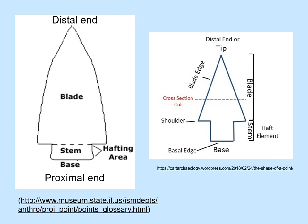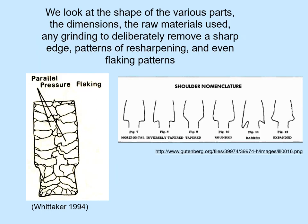The base of the biface is called the proximal end, whereas the tip is called the distal end. Some of the many attributes that might be examined in analysis of bifacial tools include the shape of the various parts, the dimensions, the raw material that was used, whether any grinding was done to deliberately remove a sharp edge, patterns of resharpening, and even flaking patterns.